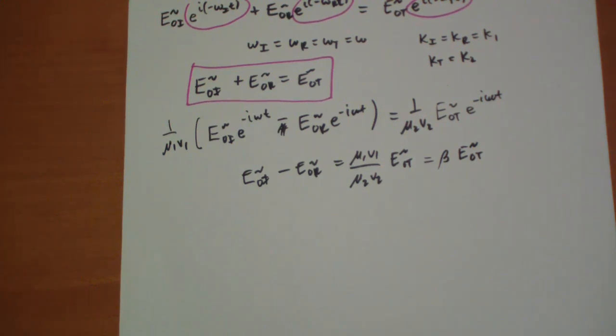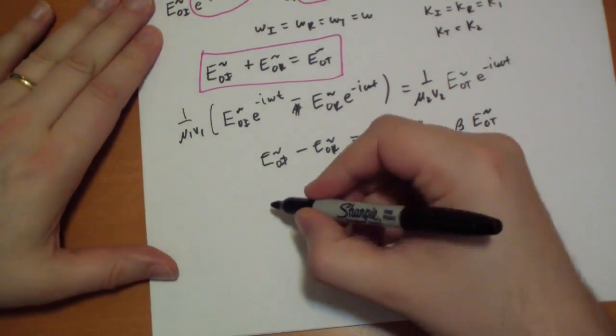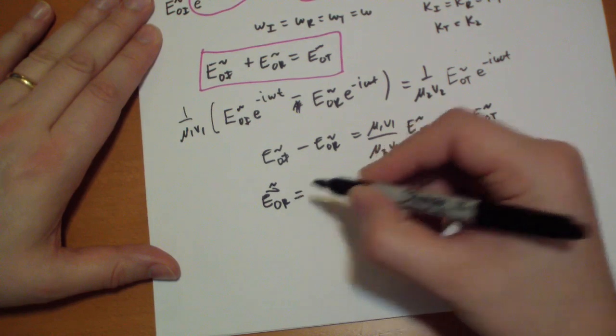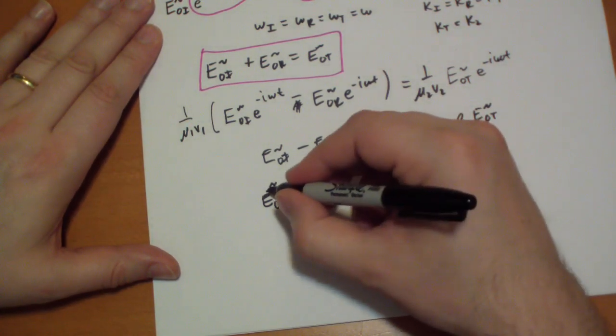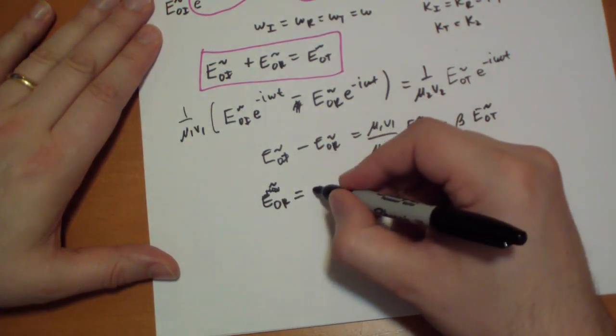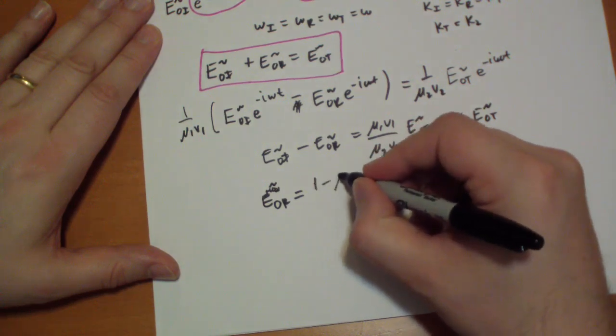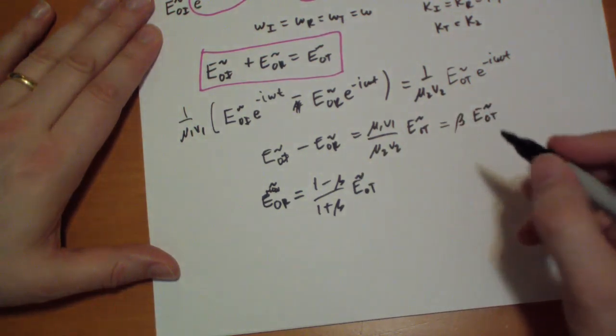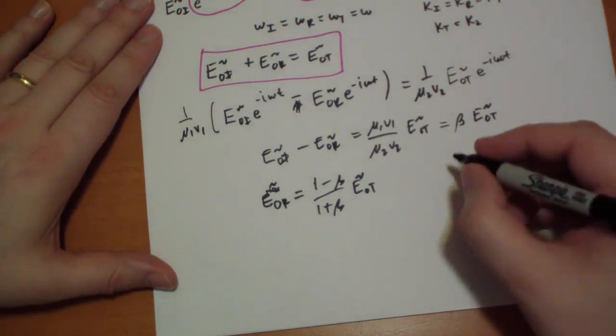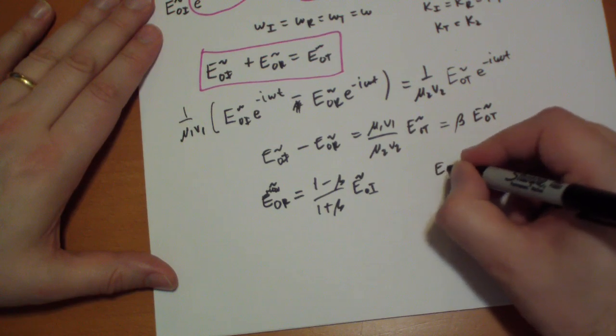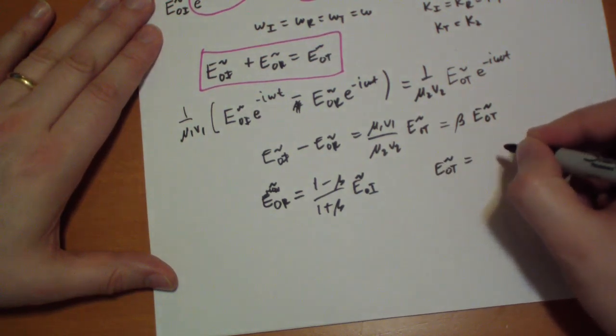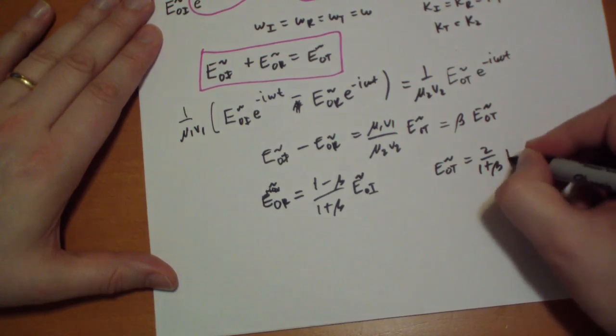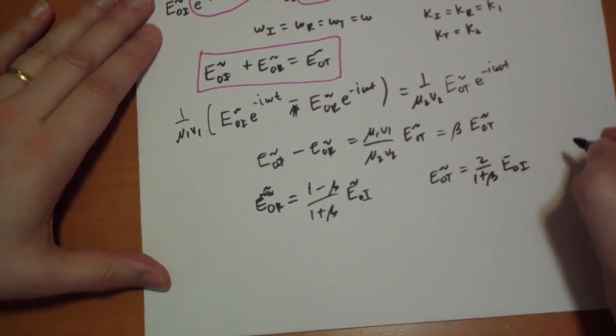Now, using those two equations, we can solve how the E naughts relate to each other. So we have E naught r has to equal 1 minus beta over 1 plus beta E naught t complex. And then we have E naught t complex has to equal 2 over 1 plus beta E naught i.